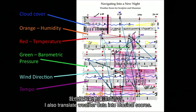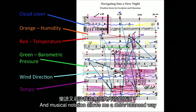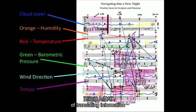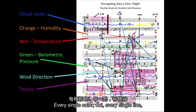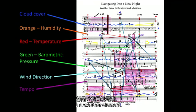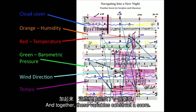I also translate weather data into musical scores. And musical notation allows me a more nuanced way of translating information without compromising it. So all of these scores are made up of weather data. Every single colored dot, every single line is a weather element. And together, these variables construct the score.